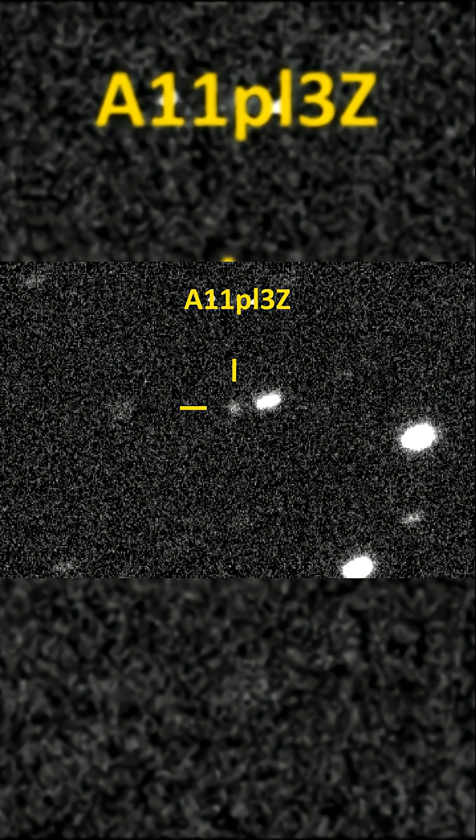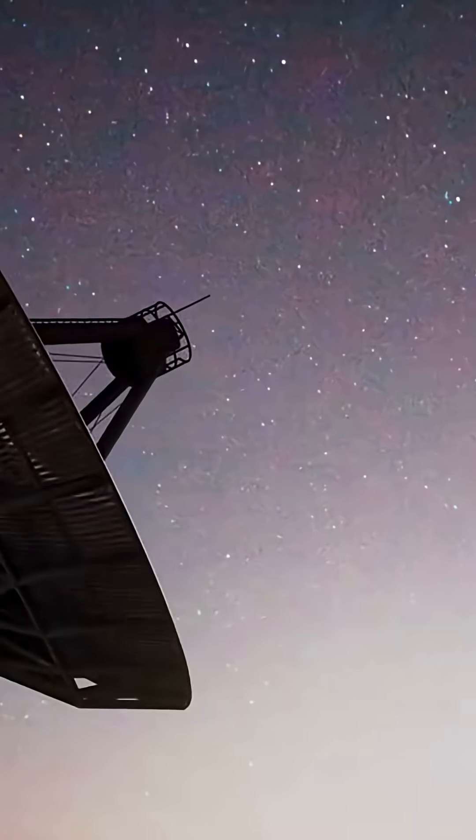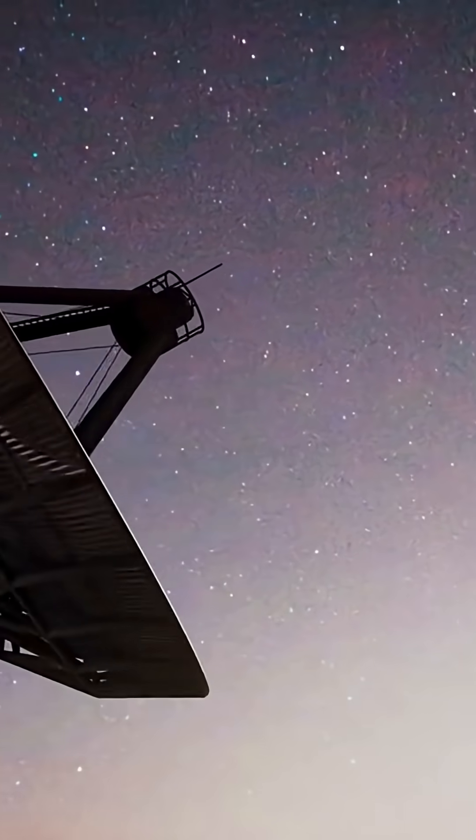Discovered on July 1 by the Asteroid Terrestrial Impact Last Alert System, the object was remotely imaged on July 2 using a telescope in Chile. This allowed astronomers to plot a preliminary orbit.